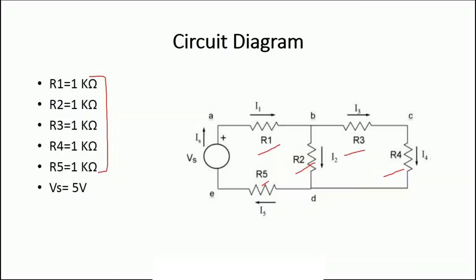The input voltage that will be provided with the help of a power supply will have the value of 5 volts. This is the arrangement — a combination of series and parallel of 5 resistances R1, R2, R3, R4, and R5.